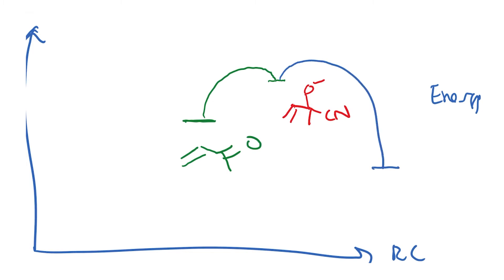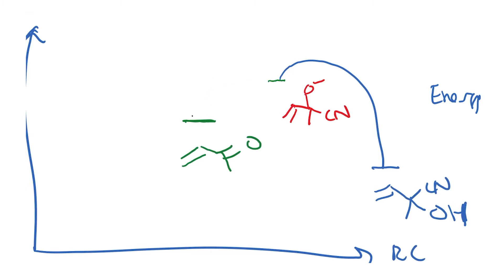Assuming it is an exothermic reaction, the protonation step gives you the cyanohydrin product. The first step — that is, the reaction with cyanide — can occur and there is enough energy at 5 to 10 degrees for this reaction to occur. Since the conjugate addition is the slow step, it is likely that the barrier for conjugate addition must be higher.